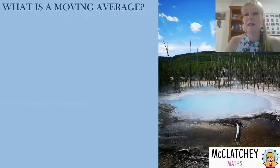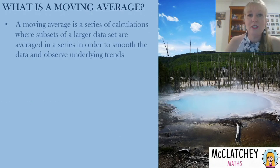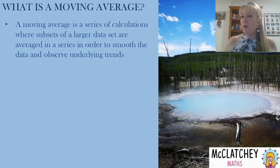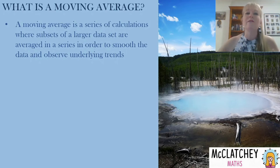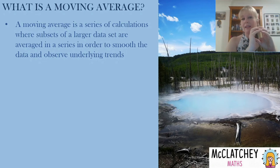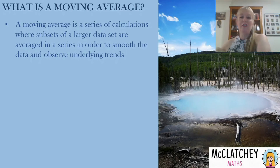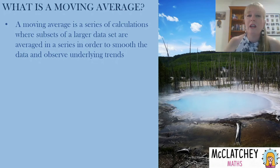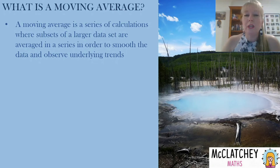So you might be asking, what is a moving average? It's a series of calculations. You should know what an average is — that's when we find the mean of something; we add up all the values and divide by how many values there are. Well, with a moving average you do that over and over again, where you take a small set of your big data set, you take an average, and then you keep moving that average on. That's what we use to smooth the data and find out those underlying trends. Once you see it with the worked example, it'll make a lot more sense.